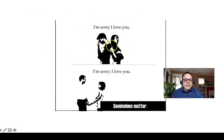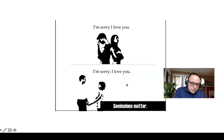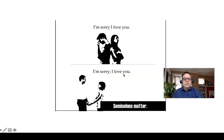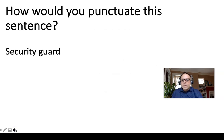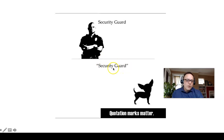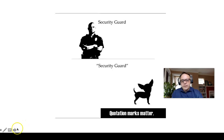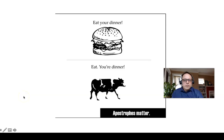'I'm sorry, I love you' — basically the person regrets loving the other person. But 'I'm sorry; I love you' — with a semicolon connecting two independent clauses — becomes an apology followed by a reaffirmation: I'm sorry I said that, but I love you. A hundred percent different meaning from just one little punctuation mark. And quotation marks around 'security guard' next to a photo of a chihuahua make it a joke, whereas without them it refers to a real security guard. Punctuation really does matter.